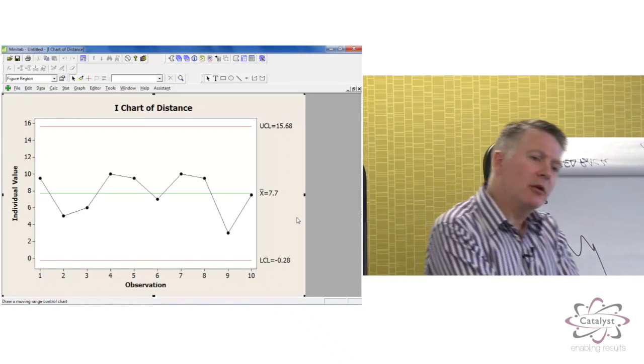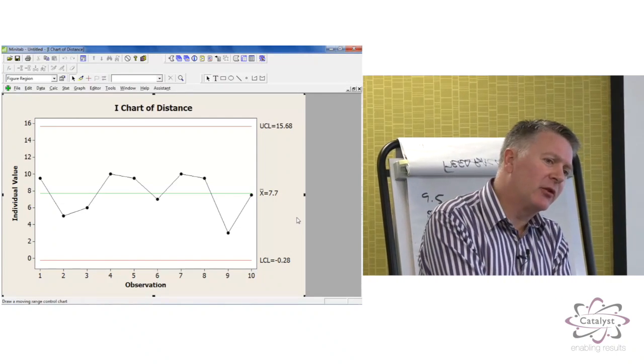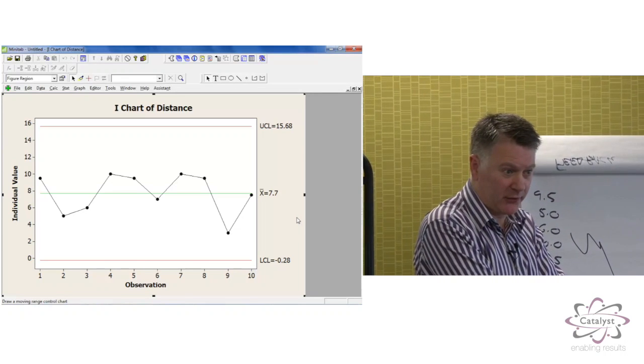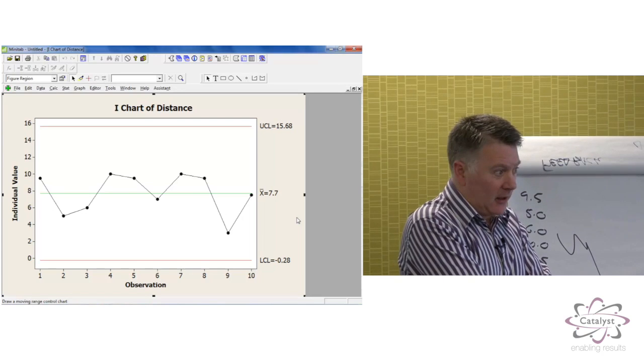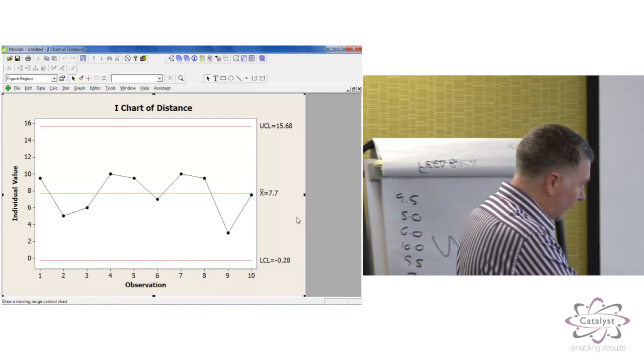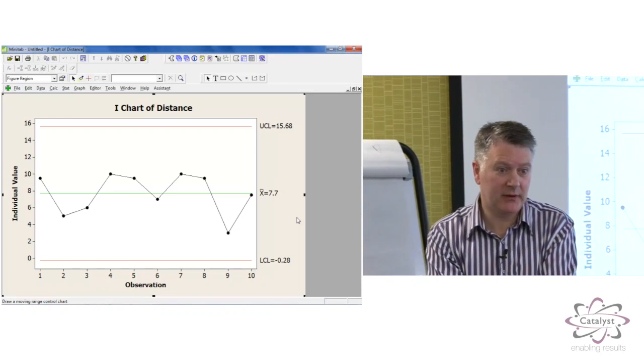Precise? No, it's not necessarily precise. It could be imprecise and still in control. Stable would be another way we could describe this process. Anything else? I guess we could say if it is in control or stable, it is a predictable process.